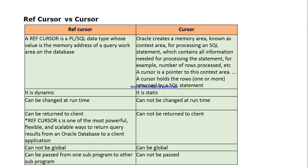Welcome back to the SQL and PL/SQL group. Today we are going to discuss what is a cursor and what is a reference cursor, and the differences between them. A cursor is a temporary work area created by Oracle, known as a context area, for processing an SQL statement, which contains all information needed for processing the statement, such as the number of rows processed. A cursor is a pointer to the context area and holds one or more rows returned by SQL statements.